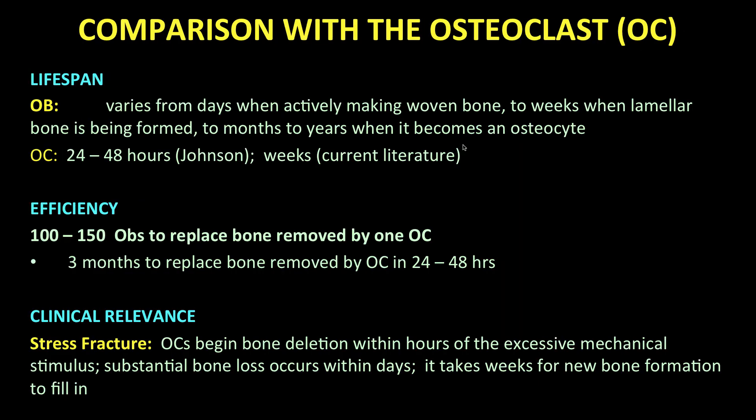The key differences between the osteoblast and osteoclast have to do with lifespan and efficiency. The osteoblast lifespan varies from days when making bone rapidly, as in this video, to weeks when lamellar bone is formed, to months or years if the cell becomes a resident osteocyte. The osteoclast, on the other hand, is a shooting star lasting just a couple of days. It is a mobile, acid-laden cell that moves along the bone's surface or tunnels within the cortex, deleting so much bone over its short lifetime that it takes 100 to 150 osteoblasts to replace it.